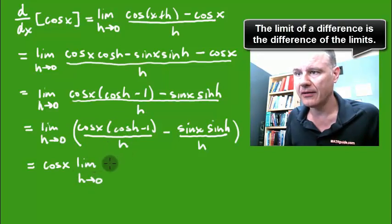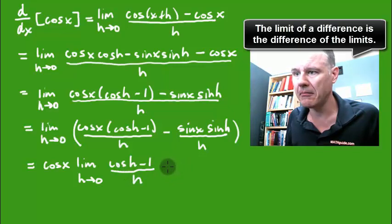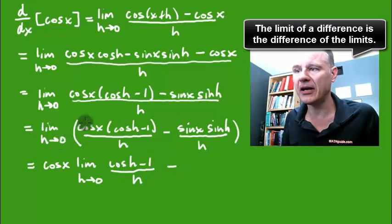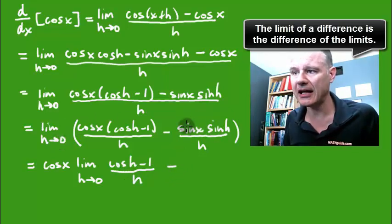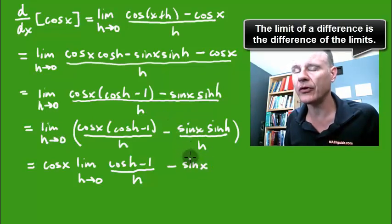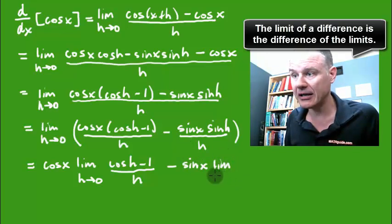So here I get the h goes to 0 of this cosine h minus 1 all over h. Minus, now I'm going to take the limit of this fraction, and again I got the sine of x.